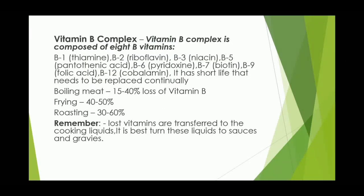Vitamin B complex is composed of 8 B vitamins: B1, B2, B3, B5, B6, B7, B9, and B12. It has a short life and needs to be replaced continually. Cooking losses: boiling meat causes 50–40% loss of vitamin B; frying causes 40–50% loss; roasting causes 30–60% loss. The lost vitamins transfer to the cooking liquids, so it is best to turn these liquids into sauces and gravies.